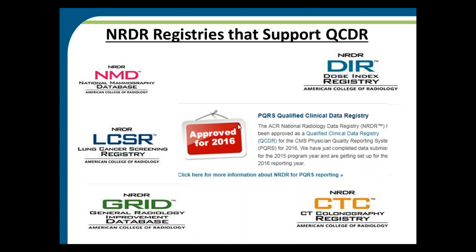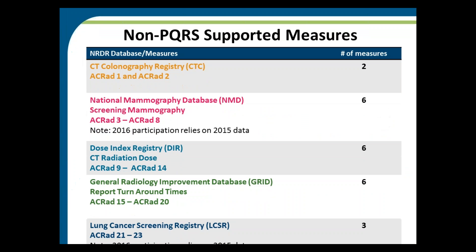Beginning in 2014, NRDR was approved as a Qualified Clinical Data Registry by CMS. All registries support non-PQRS measures: CT Colonography Registry has two measures, National Mammography Database has six, Dose Index Registry has six, General Radiology Improvement Database has six, and Lung Cancer Screening Registry has three measures. For NMD and Lung Cancer Screening Registry, 2016 participation relies on 2015 data because those two registries need one year of follow-up data.